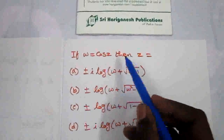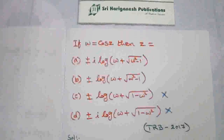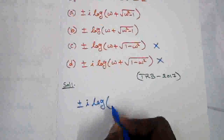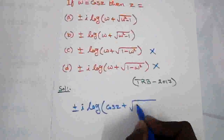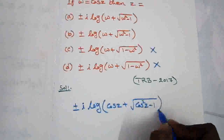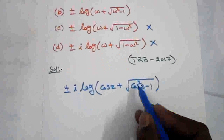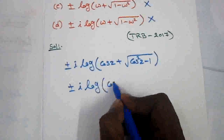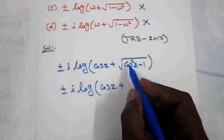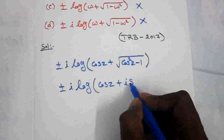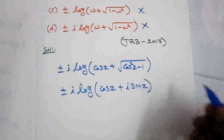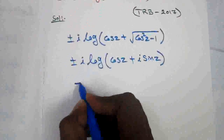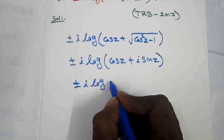Now I start from option a. Substituting w equal to cos z, we get plus or minus i into log of cos z plus root of cos squared z minus 1. Here cos squared z minus 1 becomes minus sine squared z. So plus or minus i log of cos z plus root of minus sine squared z gives i sine z. Now cos z plus i sine z can be written as plus or minus i log of e to the power iz.